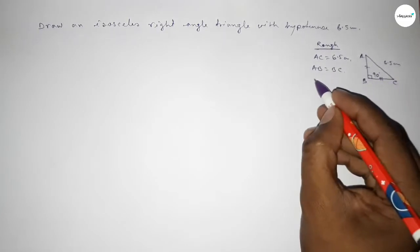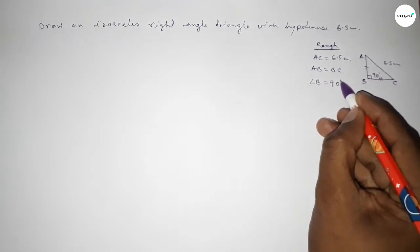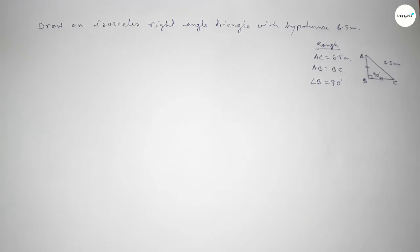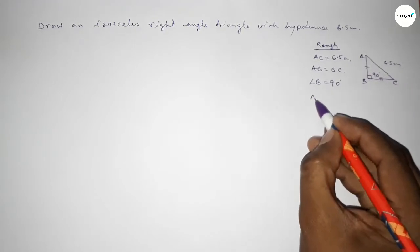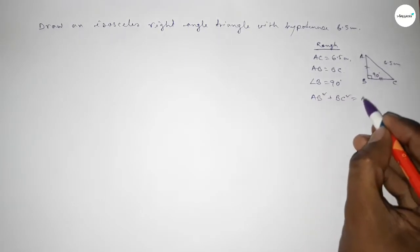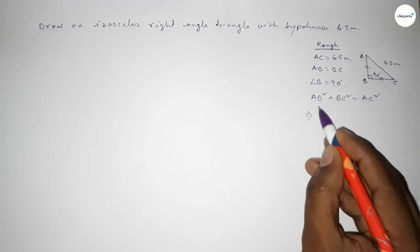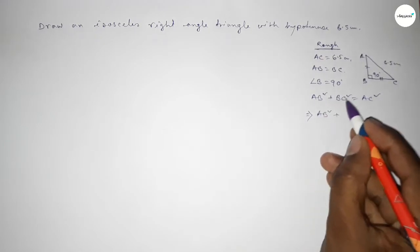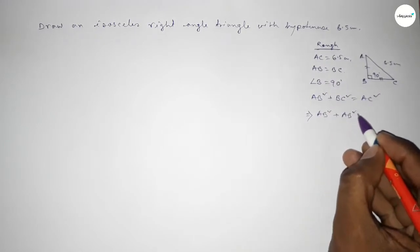Then by Pythagorean theorem, height square plus basis square equal to hypotenuse square. So AB square plus BC square equal to AC square, implies that AB square plus BC equal to AB. So AB square...